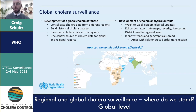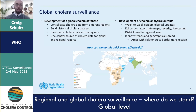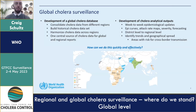By doing so, we can start to look at week-to-week EPI updates, develop EPI curves, attack rate maps, look at CFR, build forecast models, and do that all at different geographical levels from the district level all the way up to the regional and global level. When I say regional level, it will be multi-country level, not sub-national level. The idea is to identify trends in geographical spread and especially to look at areas that have risk for cross-border transmission.